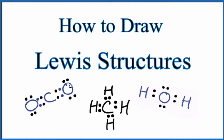In this video, we'll learn to write Lewis structures for covalent compounds. These are compounds where we have two or more nonmetals bonded together to make a molecule. The first step when we write Lewis structures is to count the valence electrons.